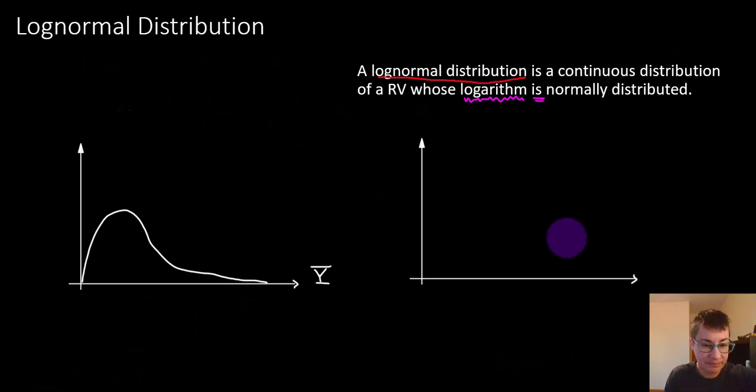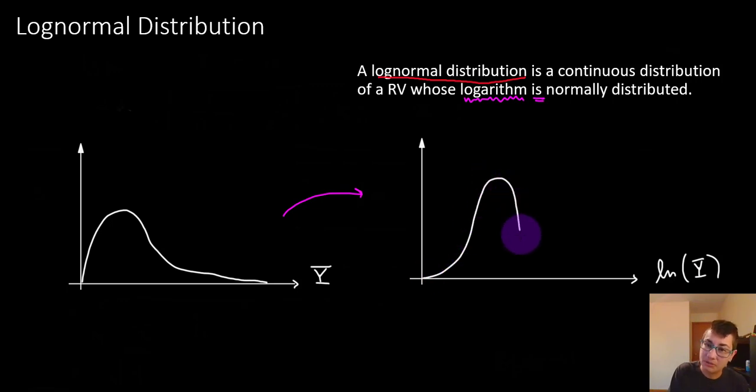However, if you take the values in your variable Y and take the natural log of them, I'll write ln of Y, and then graph those, this distribution will have that classic bell shape if this variable really is log normally distributed.